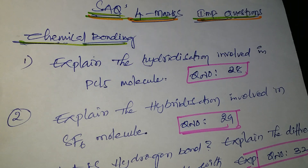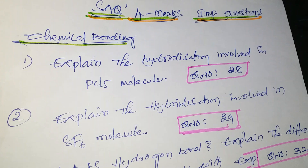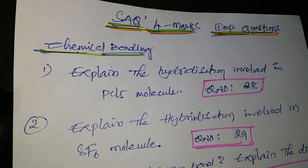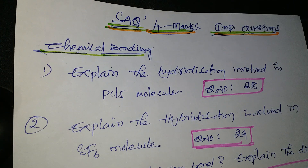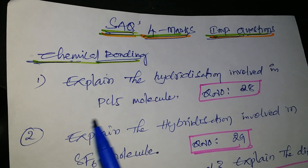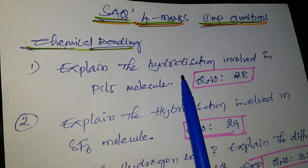Hello students. In the first year intermediate chemistry, these are the 4-mark short answer questions (SAQs), lesson-wise. The first lesson is chemical bonding. In chemical bonding, explain the hybridization...